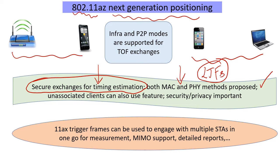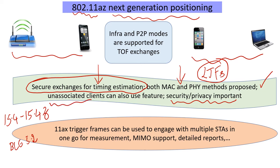A similar idea is happening with BLE 5.2, where they are bringing in secure exchanges as well. Security and privacy are extremely important here — and remember this also applies to unassociated clients, so there is significant protocol work involved, including PHY-layer cryptography.